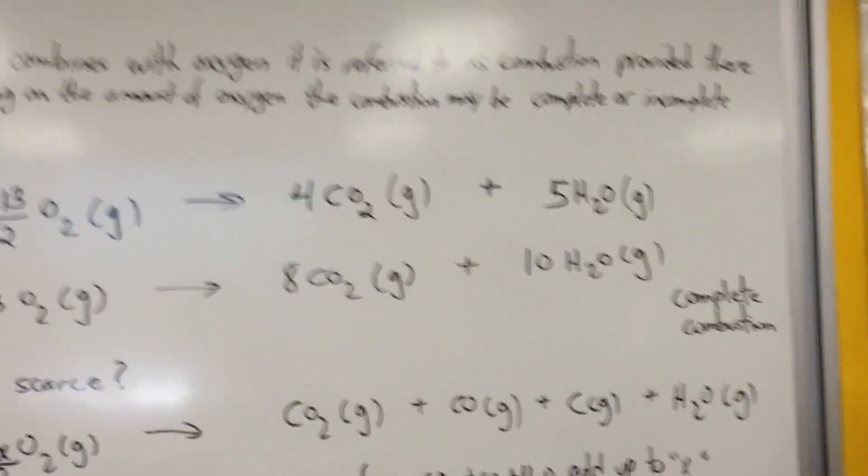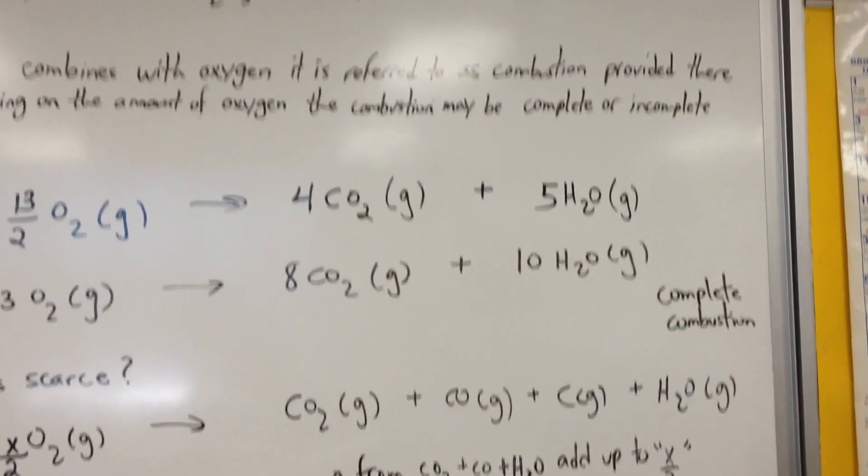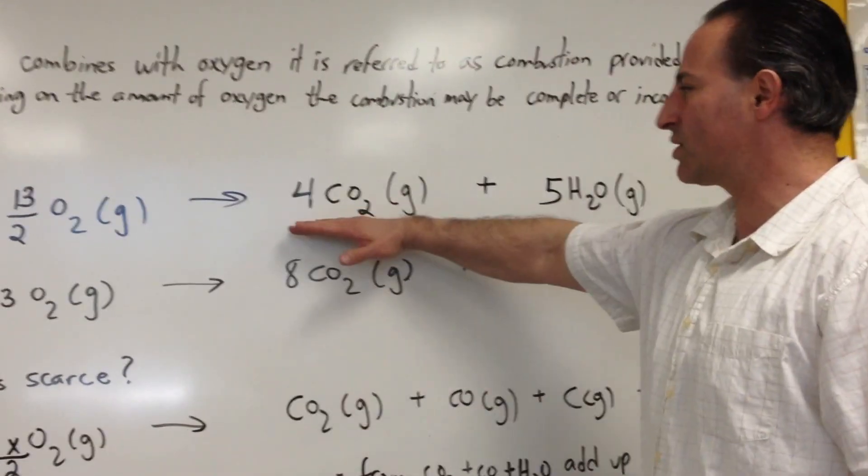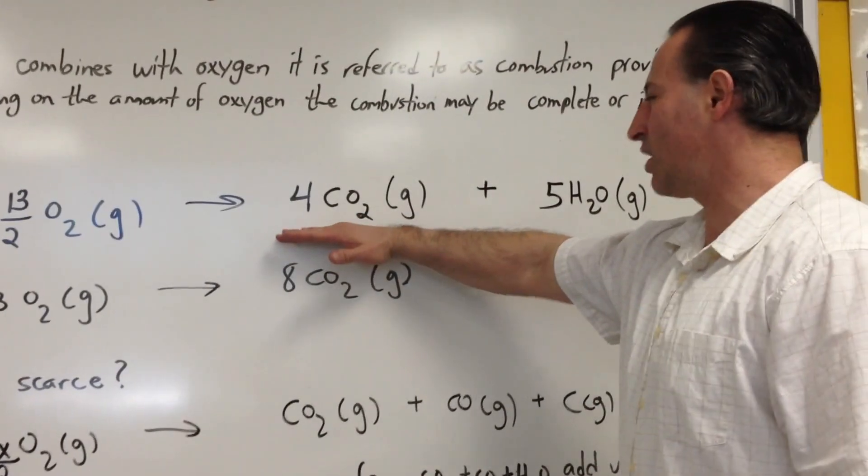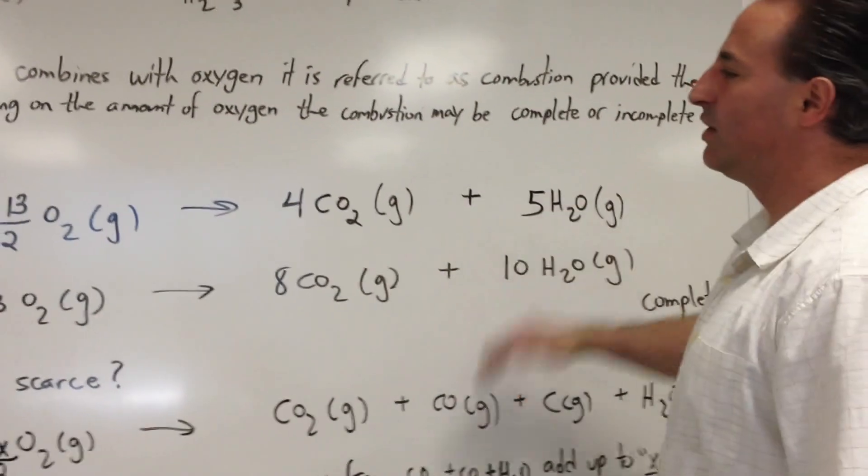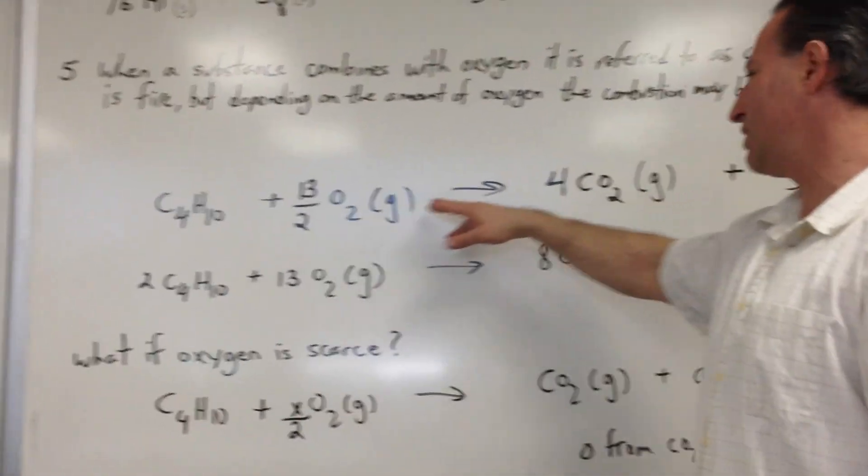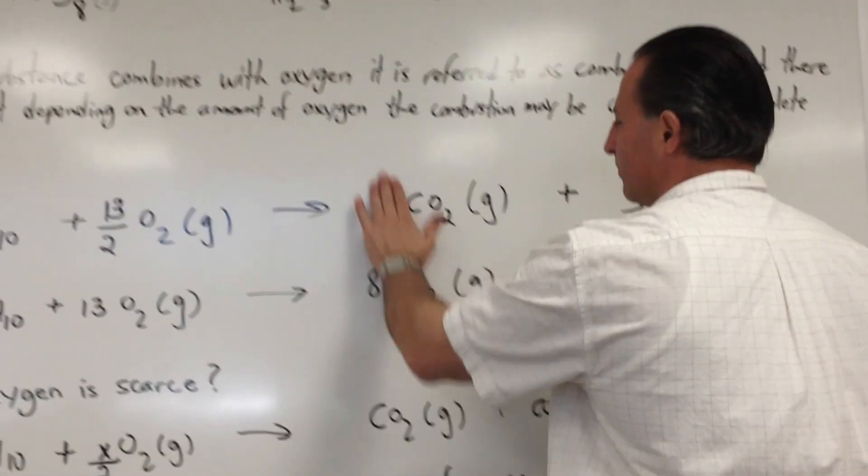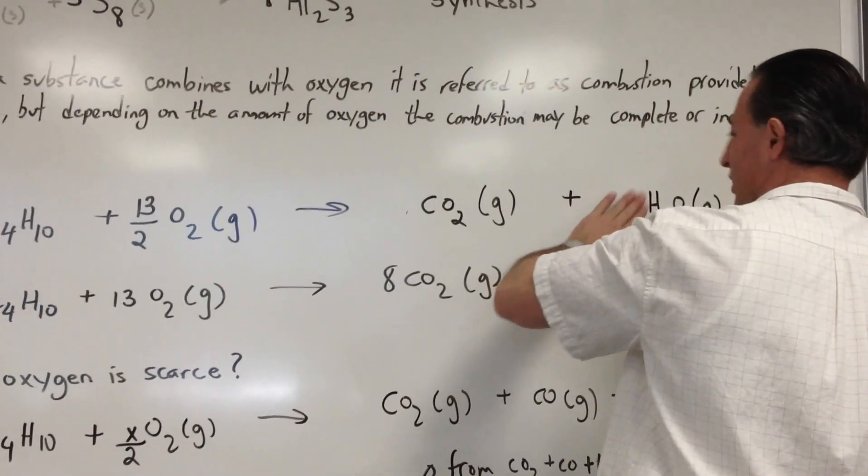And the trick to balancing combustion reactions is to proceed alphabetically. First balance carbon, then balance hydrogen, and finally balance the oxygen. So what I did for butane, let's start with the unbalanced reaction to show you how it worked.